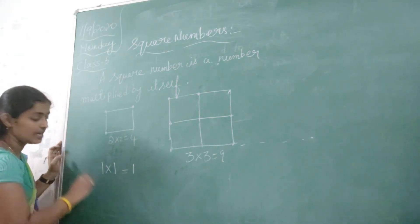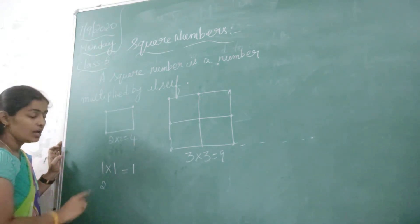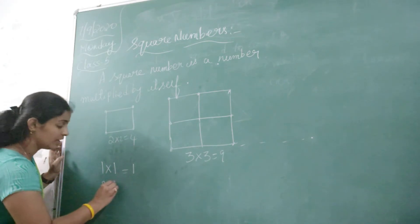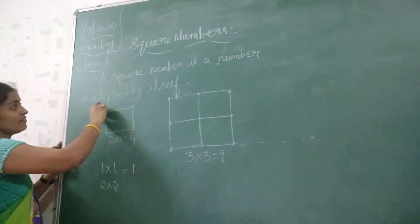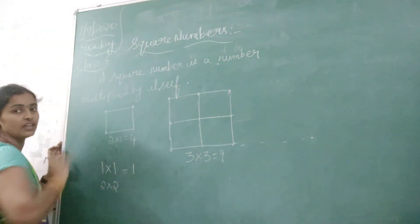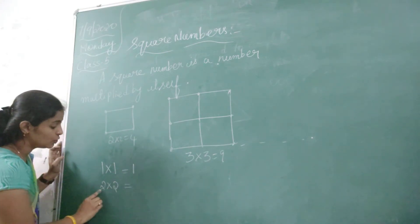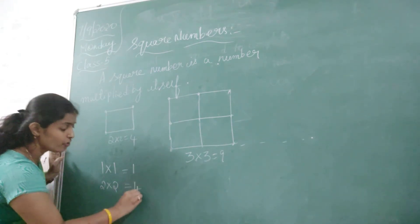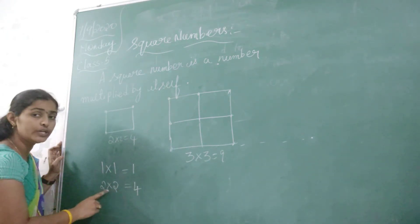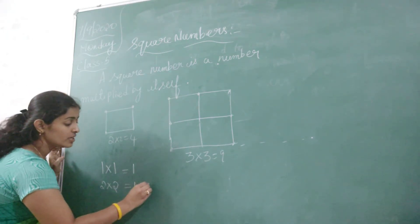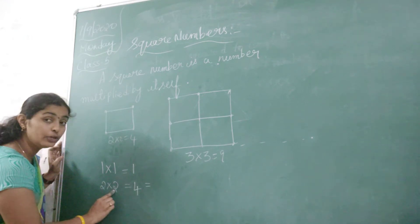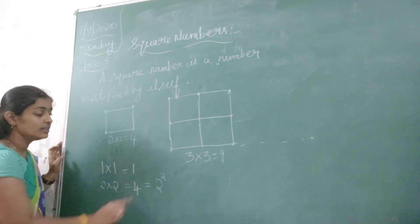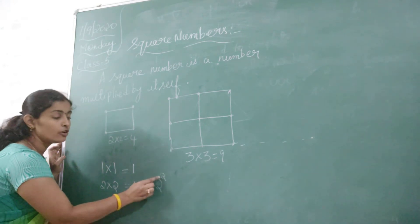So in the same way if I am taking the next number 2, multiplied with the same number — the number itself. 2 into 2 is 4. We can call it 2 to the power of 2.